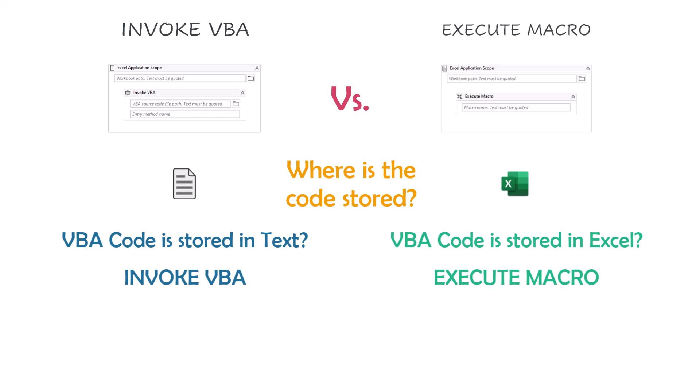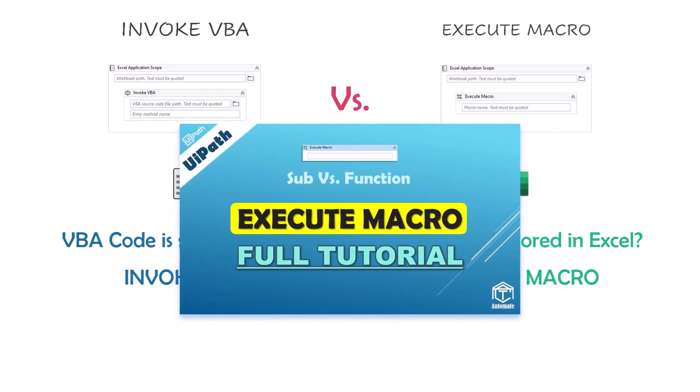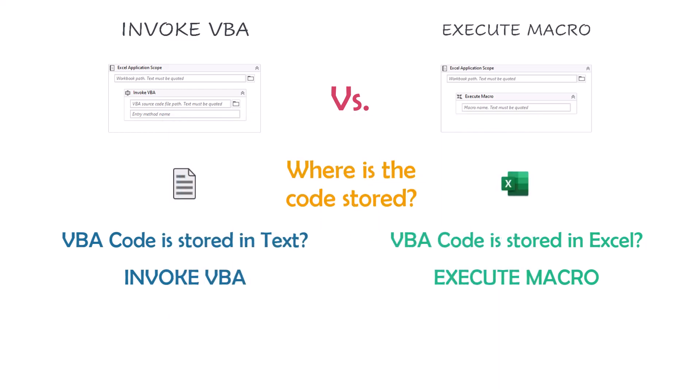If you want to learn more about Execute Macro, please watch this video — I explain the activity in detail with different examples. So if you want to execute VBA code, you have to check where your code is. If it's in the same Excel file, you can use Execute Macro activity. If the code is in a text file, you have to use Invoke VBA Activity.